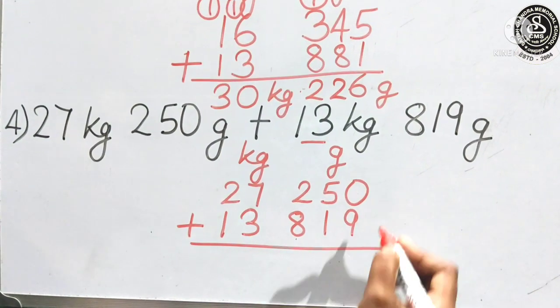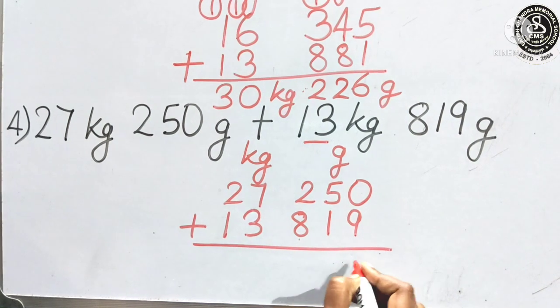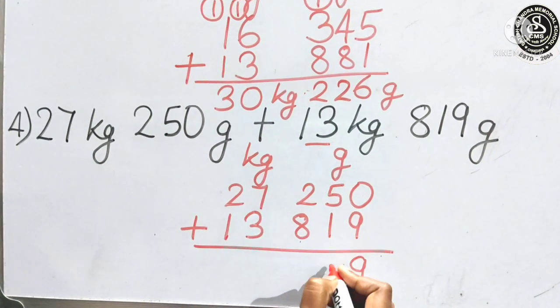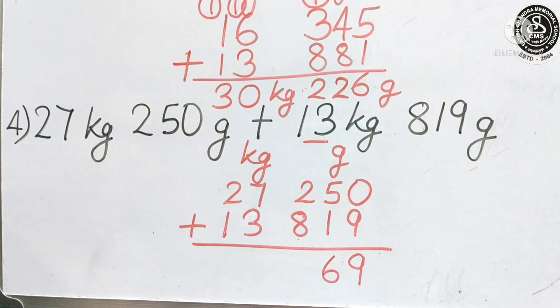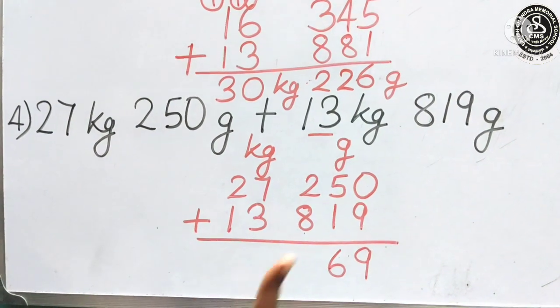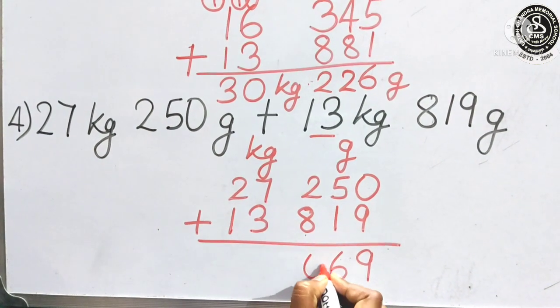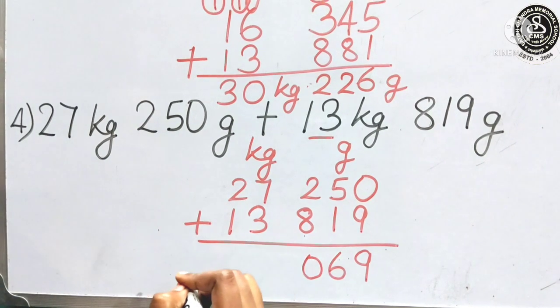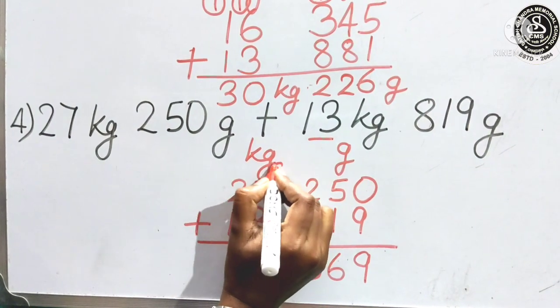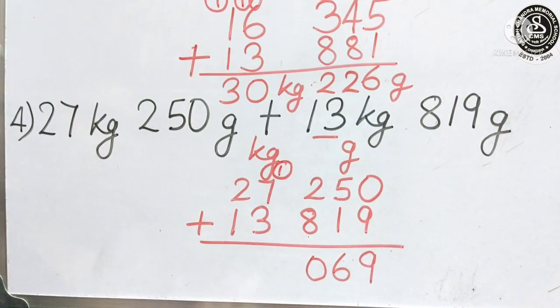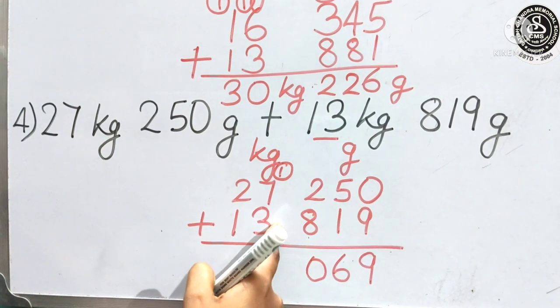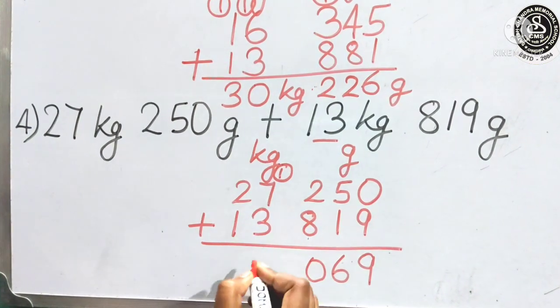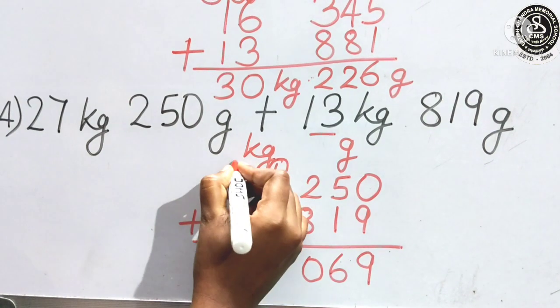Now, same thing we will do. 0 plus 9. 9. 5 plus 1. 6. 8 plus 2. 10. Again, again 1 is left. So, we will carry here. So, 7 plus 3. 10. Carry 1. We will add. 11. Again carry 1.